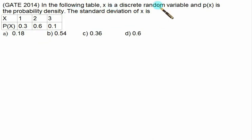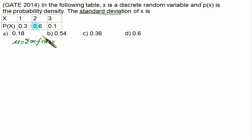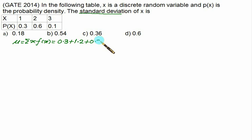In the next question, x is a discrete random variable and we want to find the standard deviation. For standard deviation we require the variance first, so we calculate mu. Mu equals sigma of x f(x): 1 into 0.3 is 0.3, 2 into 0.6 is 1.2, and 3 into 0.1 is 0.3. This sum is equal to 1.8.